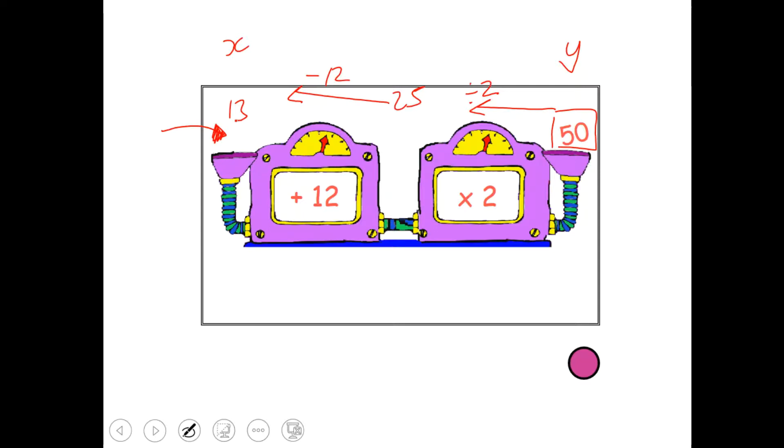Now, representing it algebraically as inputs and outputs, I would be writing x add 12 and then times by 2. Some of you, if you're in set 3 or above, I'm hoping you'll know about how to expand this bracket out, giving you 2x plus 24. Okay, and that equals the output.